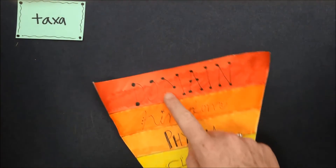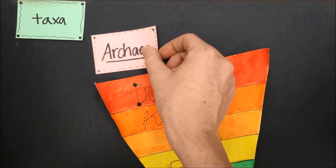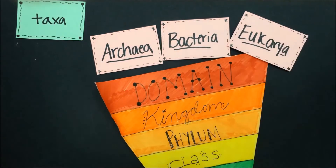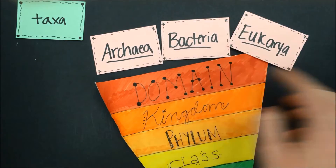Our three domains of life are archaea, bacteria, and eukarya. All living things fit into one of these three domains.